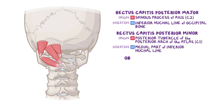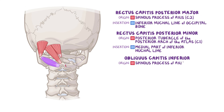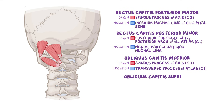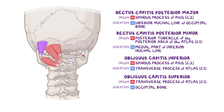Third, there's the obliquus capitis inferior, which originates on the spinous process of the axis or C2 and inserts on the transverse process of the atlas. And finally, the obliquus capitis superior originates on the transverse process of the atlas and inserts on the occipital bone, between the superior and inferior nuchal lines.